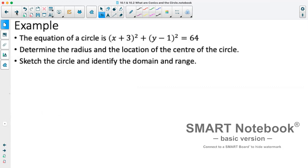Example: the equation of a circle is x plus 3 squared plus y minus 1 squared equals 64. We are to determine the radius and location of the center of the circle, then sketch the circle and identify the domain and range.